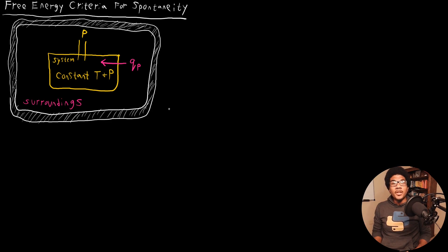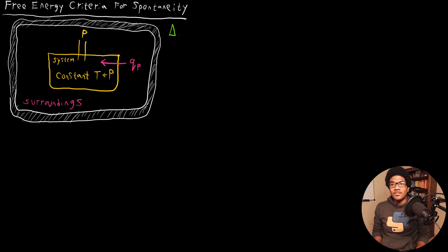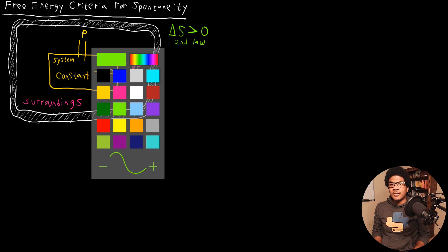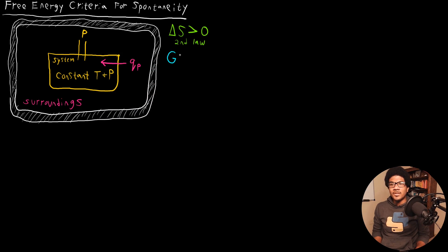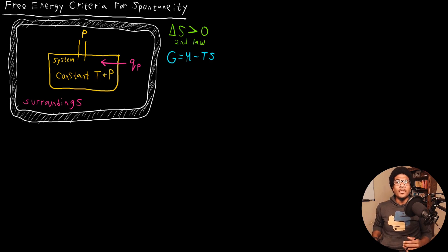In this video, we're going to discuss the free energy criteria for spontaneity. We know from the second law of thermodynamics that a process is spontaneous if its change in entropy is greater than zero. And in the previous video, we defined the Gibbs free energy as G = H − TS. What I want to do in this video is use what we know from the second law about spontaneity and entropy, and the definition of the Gibbs free energy, to derive a spontaneity criteria for the Gibbs free energy.